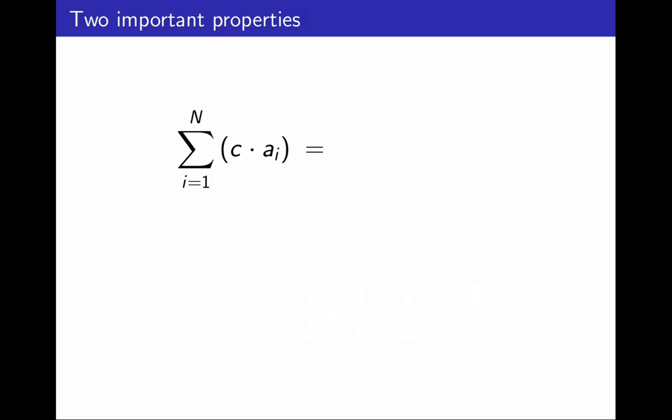First, what happens when I have a sum and there is a constant c multiplying every term? I can simply take the constant c out of the sum. This is just a fancy way to say take common factor, or use the distributive property. That's all.